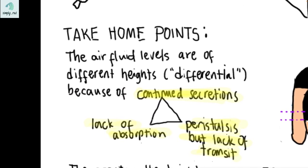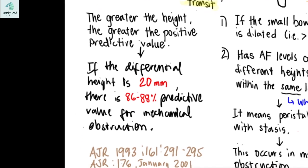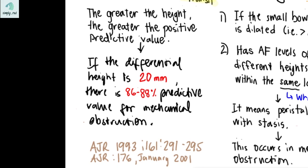The take-home point here is that air fluid levels are differential because of a triad: continued secretion, lack of absorption, and peristalsis but with lack of transit. We need to prove the proximity of the air fluid levels, which is why we compare them within a single loop. If the differential height is 20 mm or more, there is 88% positive predictive value for mechanical obstruction — and the greater the height difference, the greater the positive predictive value.